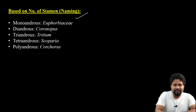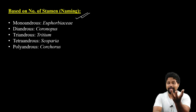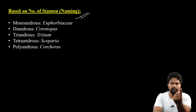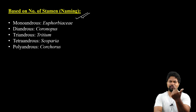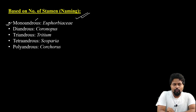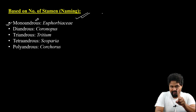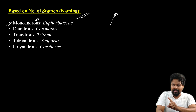First, based on the number of stamens: the first condition is the monoandrous condition. Monoandrous means a single stamen. If a flower has a single stamen, this is the monoandrous condition. An example is Euphorbiaceae.